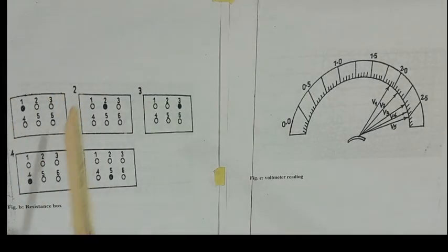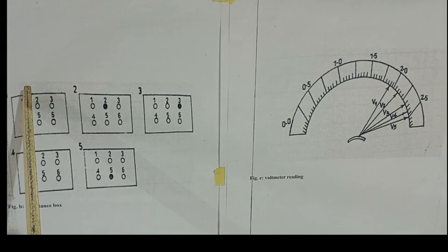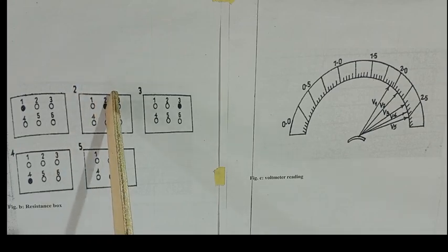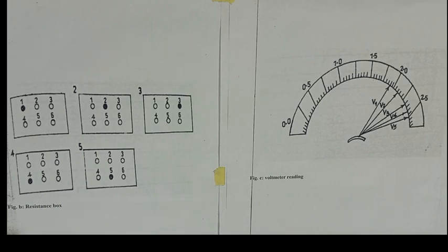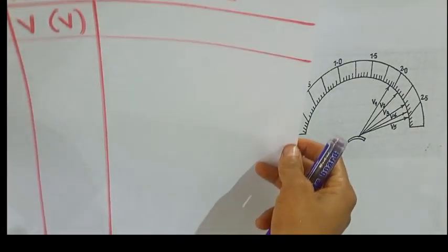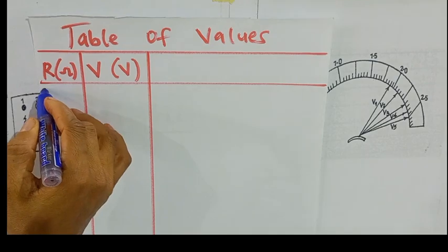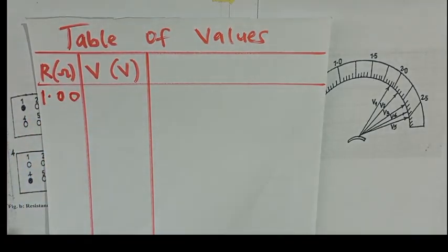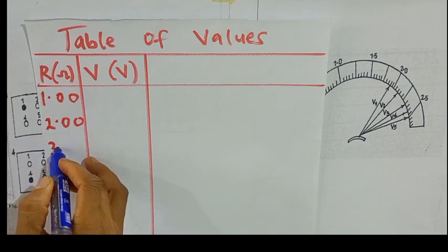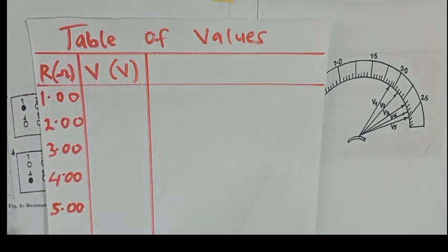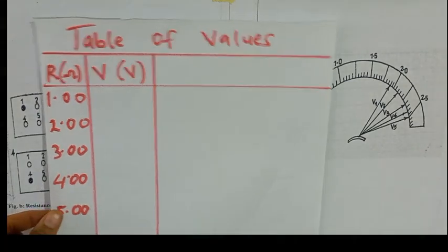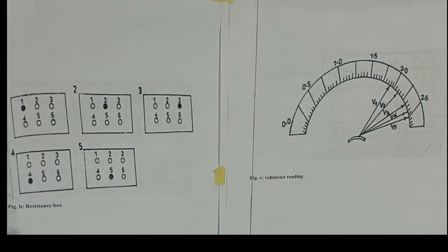Let's take our readings. This is the resistance box. Remember, this point shows one ohm, so the first reading is 1 Ω, the second is 2 Ω, the third is 3 Ω, the fourth is 4 Ω, and the fifth is 5 Ω. Remember, readings must be in decimal form to two decimal places: 1.00, 2.00, 3.00, 4.00, 5.00 — with units in ohms.